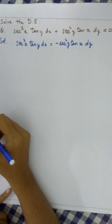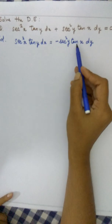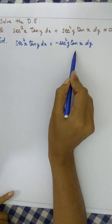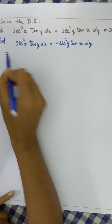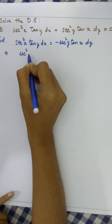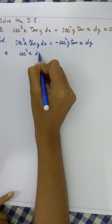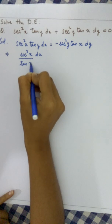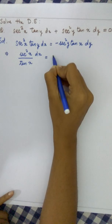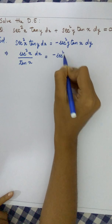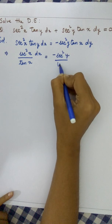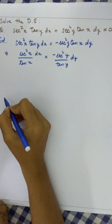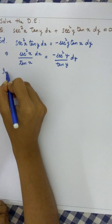Now we can separate the x and y terms by taking tan x to the left side and tan y to the right side. We get sec²x dx over tan x equals minus sec²y dy over tan y.